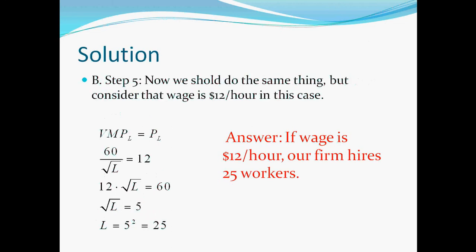Now in part B it is enough to solve that equation again. But we have to change price of labor or the wage to 12 dollars. So in this case, optimal input use will be 25 workers.